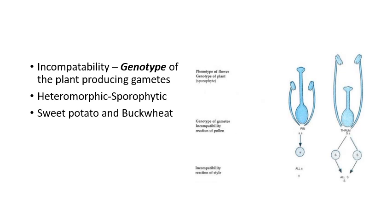The genotype is ss (homozygous recessive) in the case of pin, and Ss in the case of thrum. The incompatibility of the pollen genotype is ss in pin and Ss in thrum. The incompatibility reaction in the style would be governed by s in pin and S in thrum, because capital S is dominant over small s. This is a case where the genotype is determined by the plant on which it is produced. When pin and thrum are crossed, it results in a 1:1 ratio. Similar systems are seen in buckwheat and sweet potato.